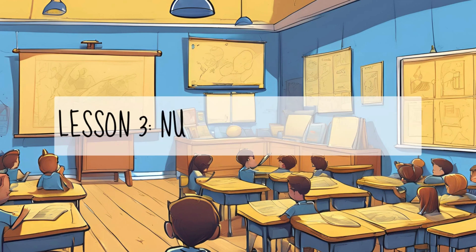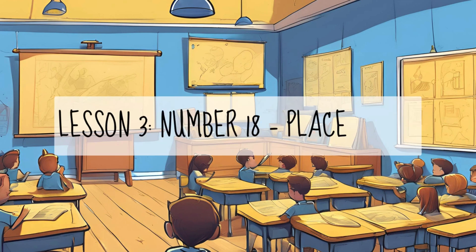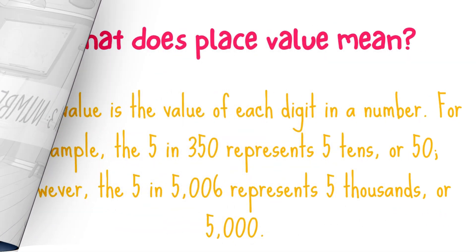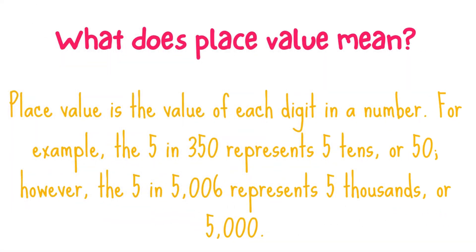Lesson 3, Number 18: Place Value. Place value is the value of each digit in a number. For example, the 5 in 350 represents 5 tens, or 50.